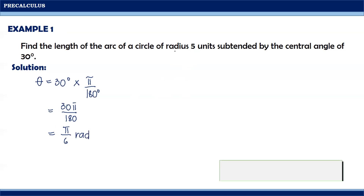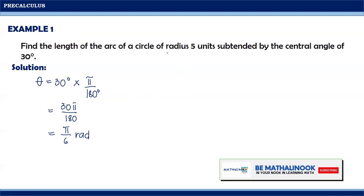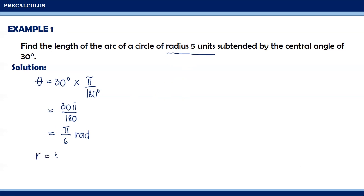Moreover, it is also given that our radius is equal to 5 units. From here, we can now use the formula in finding the length of the arc. So, s is equal to r times theta.